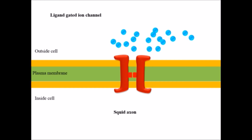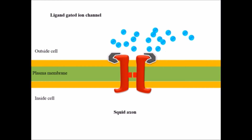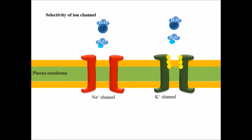Now, what about ligand-gated ion channels? They are similar to voltage-gated channels; the difference is that here it is not a voltage difference but the binding of a ligand that initiates the opening and closing of the channel. After the binding of a ligand, the channel opens and potassium ions are imported inside. If you remember the synaptic nodes, acetylcholine binding leads to the opening and closing of the sodium channel — that is the best example of a ligand-gated ion channel.